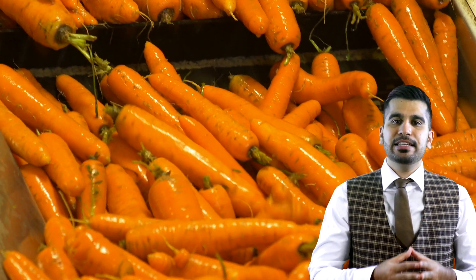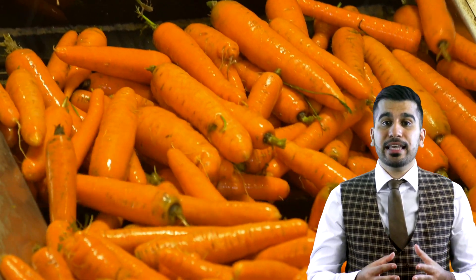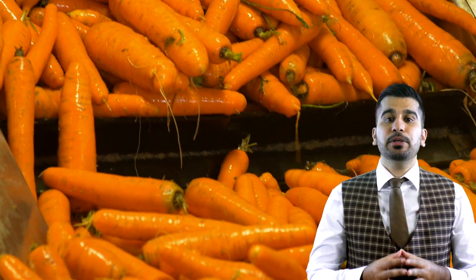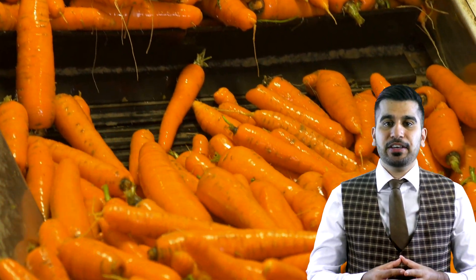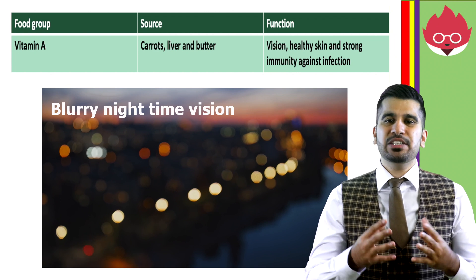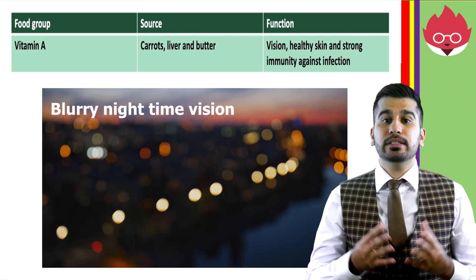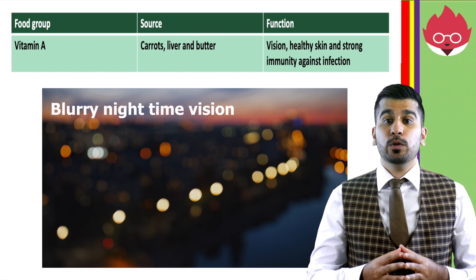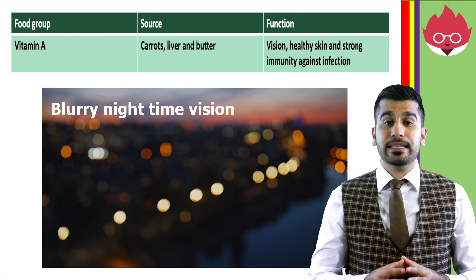Vitamin A, found in carrots, liver, and butter, is important for vision, healthy skin, and strong immunity against infection. A lack of vitamin A can lead to a disease called night blindness, which makes it difficult to see in low light.